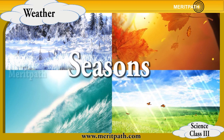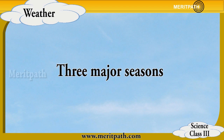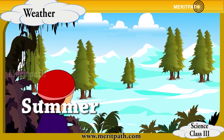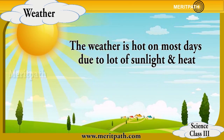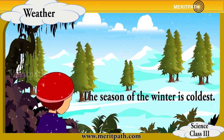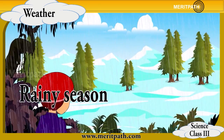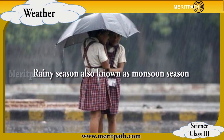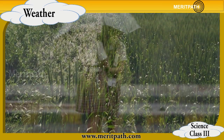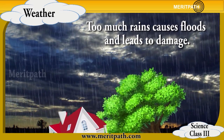Seasons: In India we have three main seasons — the summer season, the rainy season, and the winter season. It is very hot during summer and the days are long and warm. The winter season is the coldest; the days are short and people wear woolen clothes. The rainy season is also known as the monsoon season. Good rains are very important for the growth of crops, but excess rain can also lead to their damage.